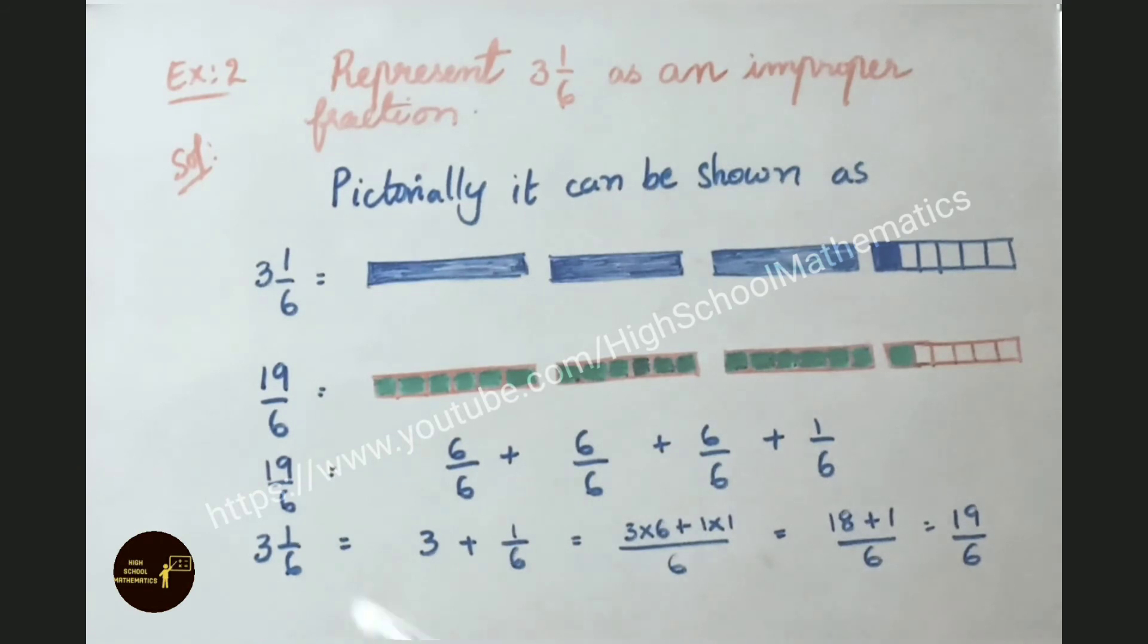Now let us see here 3 and 1 by 6, how to convert into improper fraction. So 3 and 1 by 6 split as 3 plus 1 by 6. Here 3, below no number is there, we can take it as 1. Now if we do LCM for 1 and 6 we got LCM as 6. Now we shall do cross multiply: 3 into 6, 1 into 1. 3 sixes are 18 plus 1 into 1 is 1. So 18 plus 1 answer is 19 by 6.